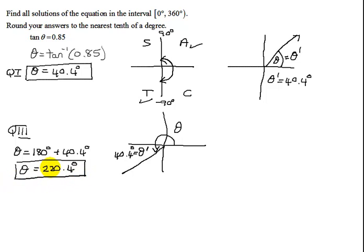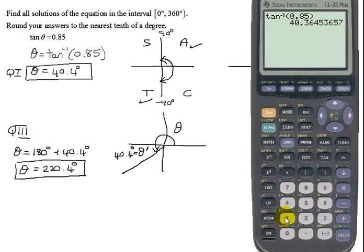And how can we check that answer very quickly? All we have to do is take the tangent of that number. So what is the tangent of 220.4 degrees? It should be roughly where I started at 0.85. Since I rounded my intermediate values, this will not be exactly 0.85. But is it close? Yes, that tells you you've done it right.